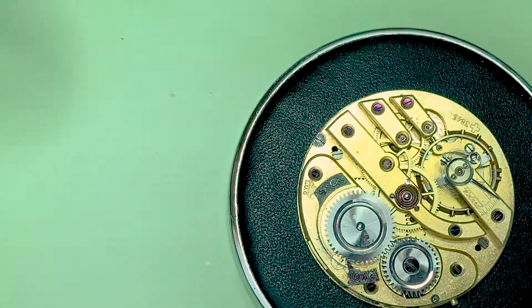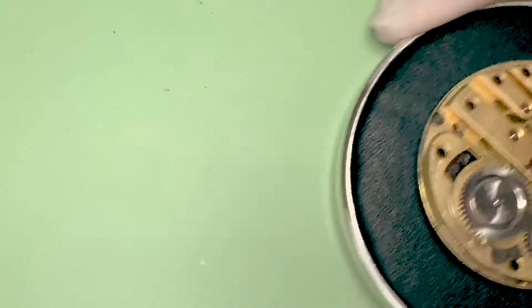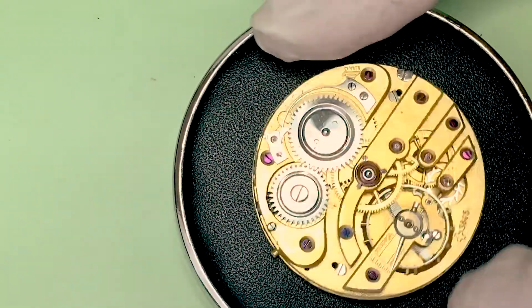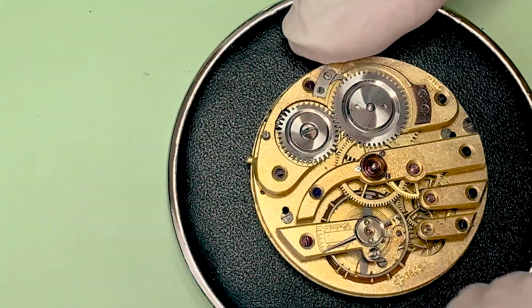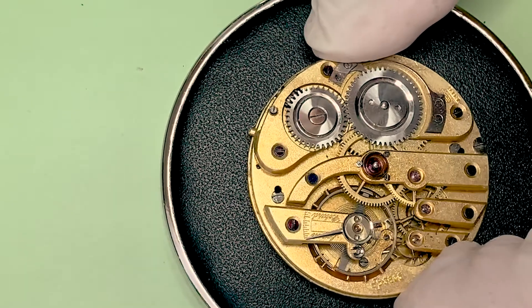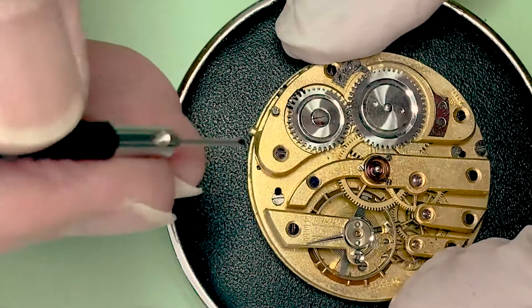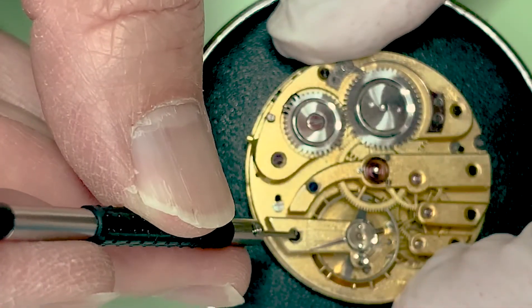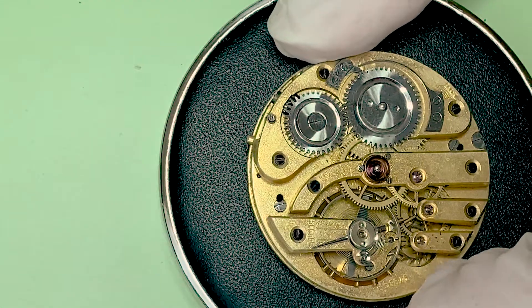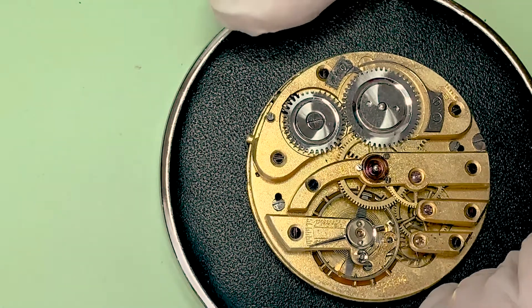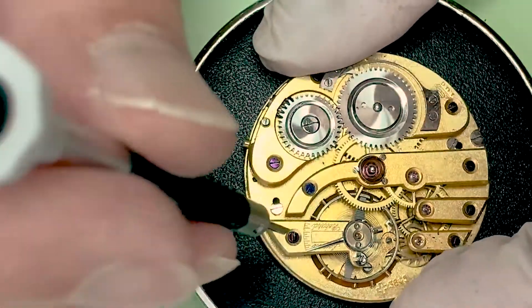I'm sure they're heat blued screws. They look absolutely like it to me. And the movement says 15 rubies. They think it's kind of funny, or rubis. It's French, you know. But most or many of the jewels don't actually look red. So there are many of them that are clear. So I think that's interesting.